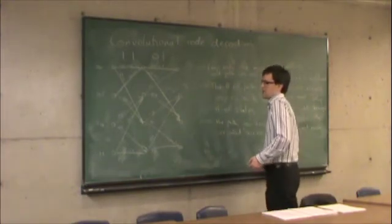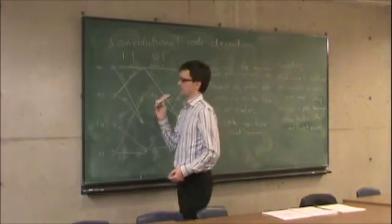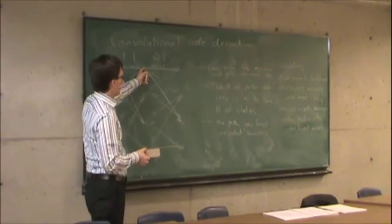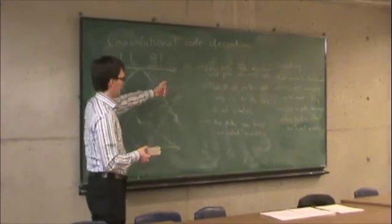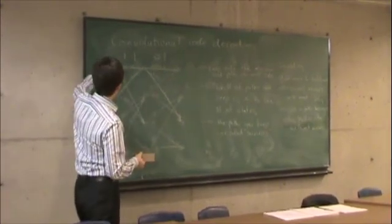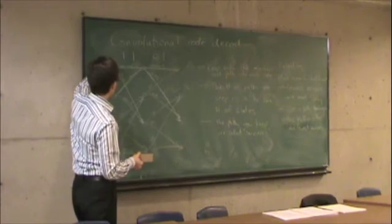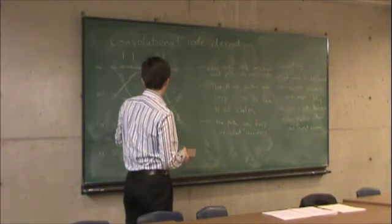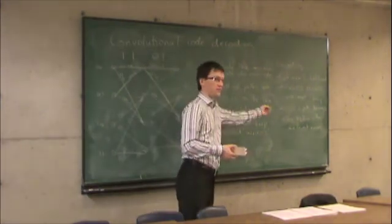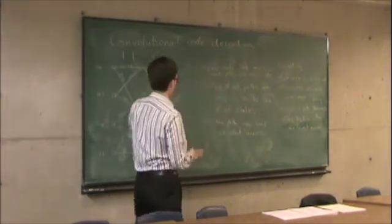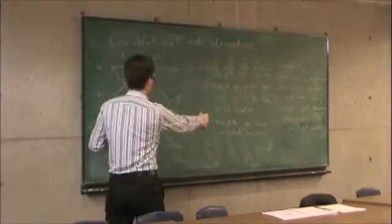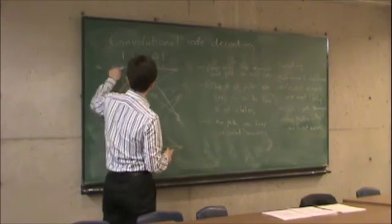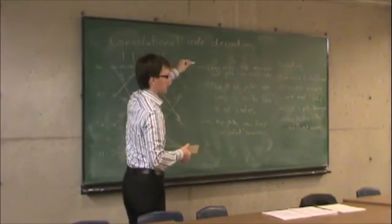If you think about all possible paths through this graph, with each state you pick up two additional outgoing edges. Starting from the all-zero state there are two possible paths, then four, eight, sixteen, thirty-two, and so on — it grows exponentially. But you don't need to keep all of them; you only need to keep the minimum into each state, so the complexity stays at four states' worth of survivors rather than growing exponentially.